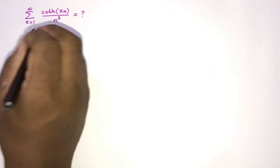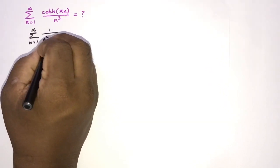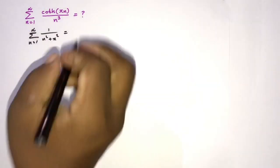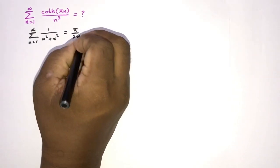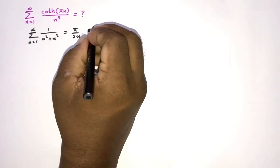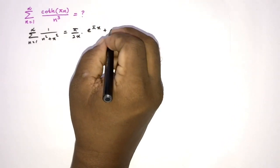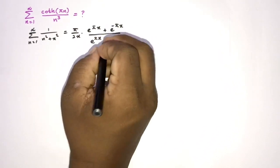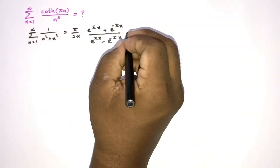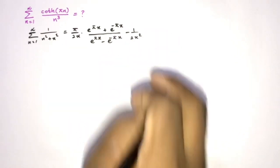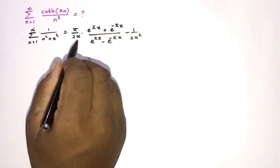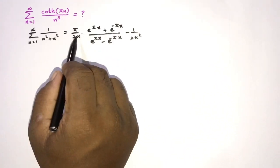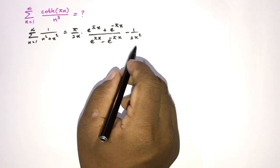We know this series is equal to pi over 2x times (e to the pi x plus e to the minus pi x) over (e to the pi x minus e to the minus pi x), minus 1 over 2x squared. In a previous video I solved this infinite series and the answer is pi over 2x times that expression, minus 1 over 2x squared.